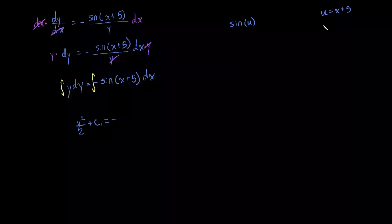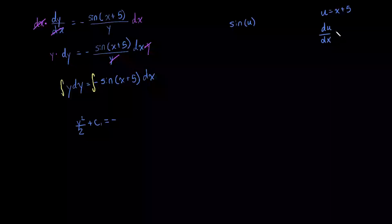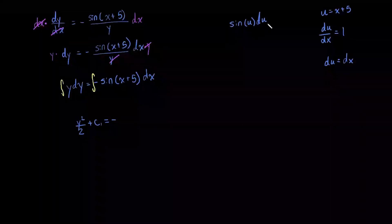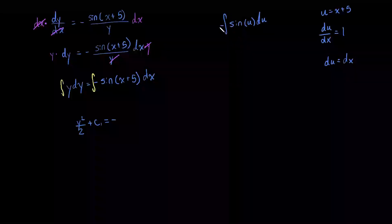If we take the derivative with respect to x, we get du equal to dx. Since we have a dx right there, we can substitute it in with du, so we get the negative integral of sine of u du.